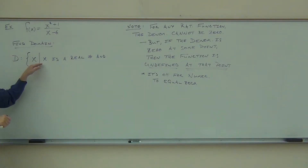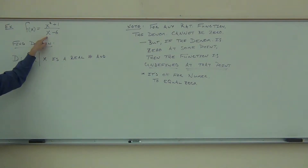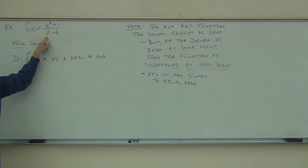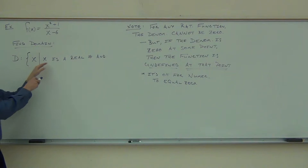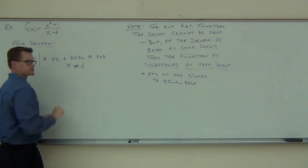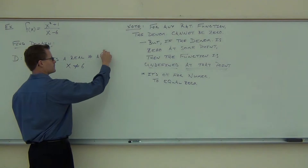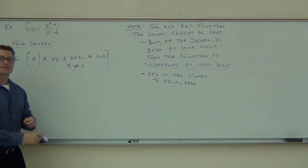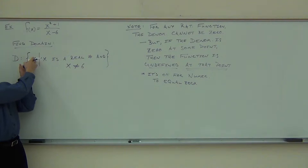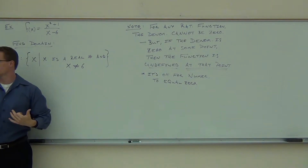So what we're going to do is say x is a real number. I can plug in anything else. If I plug in two, is it okay? If I plug in negative 12, is it okay? The only number I cannot plug in is positive six. That's the only number that would be bad. So we go: x is a real number, anything, and x cannot equal six. That says if x equals six, I get something that's undefined. That's how you write your domain.